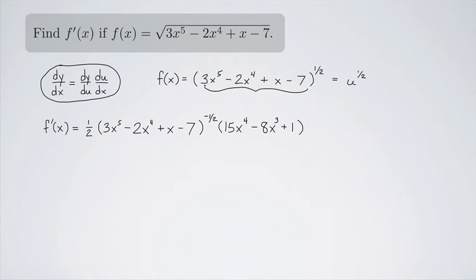So just to summarize, we took the derivative of the outside function. That was the square root. So you take the derivative of a square root, you bring down a half, leave the inside the same, change this to a negative 1 half, and then multiply it by the derivative of the inside function. That's the derivative of this polynomial right here.